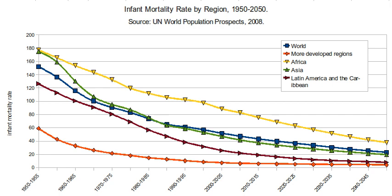Infant mortality rate is the number of deaths per 1,000 live births of children under one year of age. The rate for a given region is the number of children dying under one year of age, divided by the number of live births during the year, multiplied by 1,000.